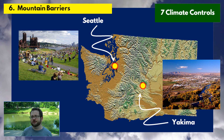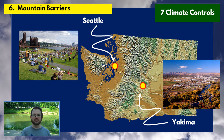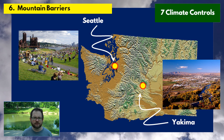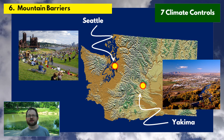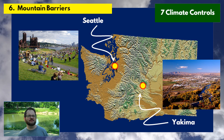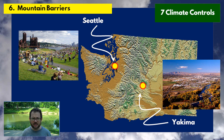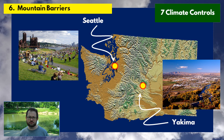Seattle is very green — its marketing slogan is the Emerald City. Yakima, by contrast, is hot and dry. They grow things like potatoes in Yakima, but it's all irrigated because it's too hot and dry there to get much natural precipitation.